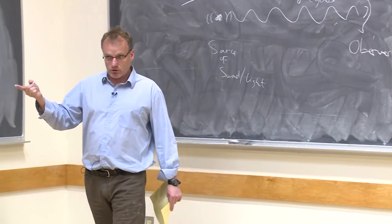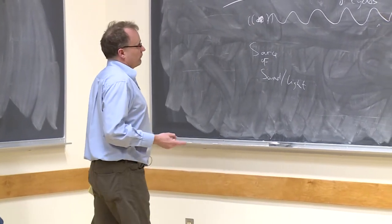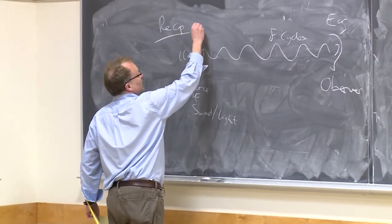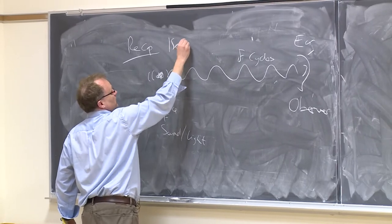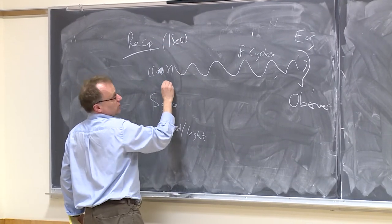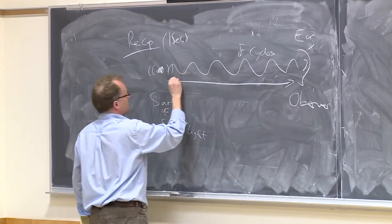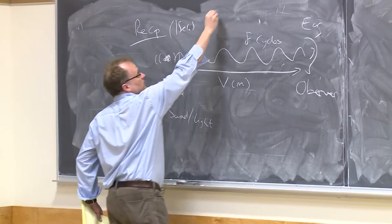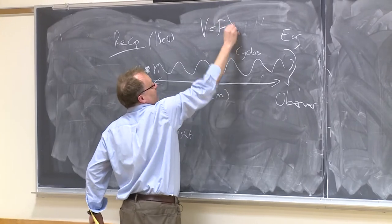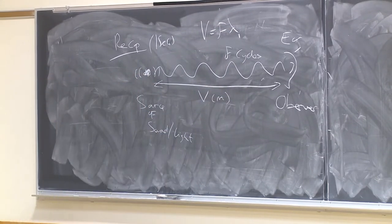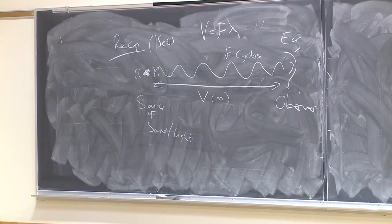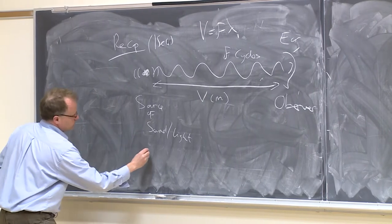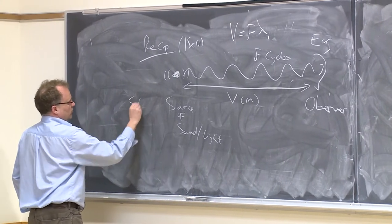The frequency is the number of cycles per second. So if we consider one second of time, then this distance would be v meters, where v is equal to f lambda. This is just a recap. And if the source was moving, this would be a stationary source.